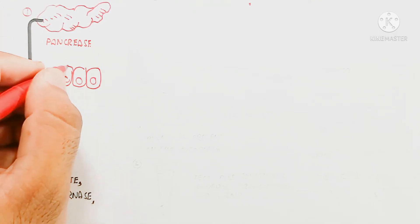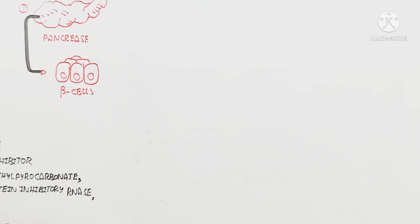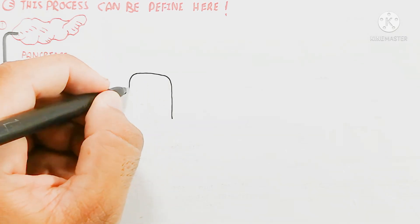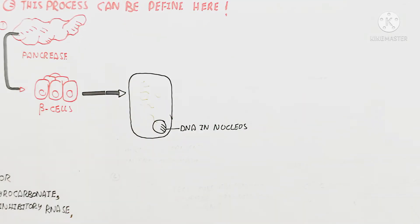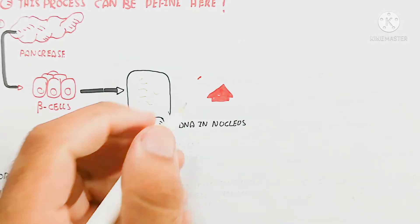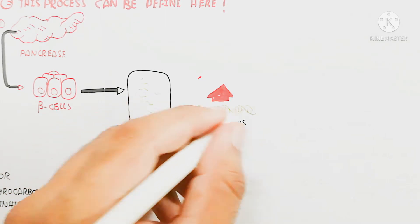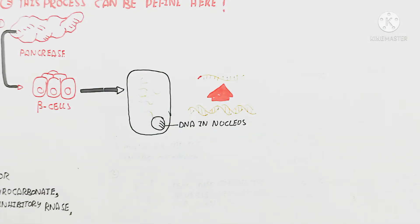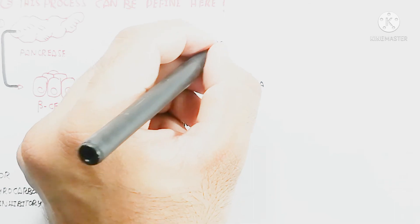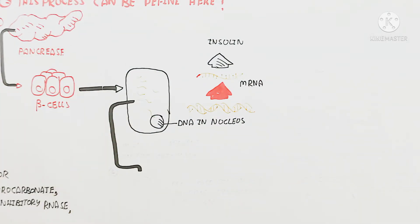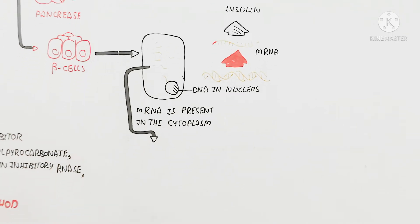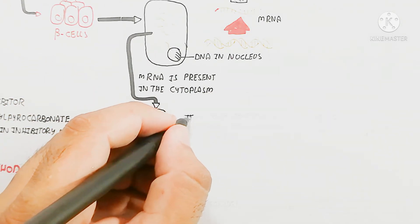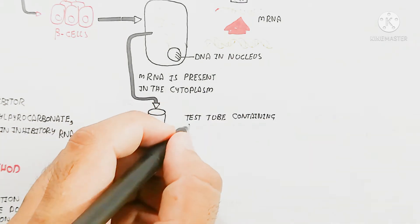The pancreas contains beta cells. Beta cells produce insulin. The DNA in the nucleus is present as a double helix, which is transcribed into messenger RNA that moves into the cytoplasm, where it is translated by ribosomes and transfer RNA to produce insulin — the hormone that regulates blood sugar. The messenger RNA is separated using the RNA isolation process previously discussed, and the first step is separation of the beta cell.